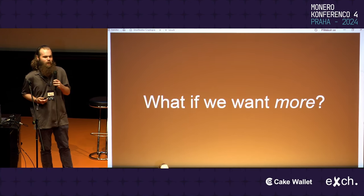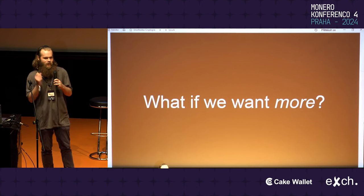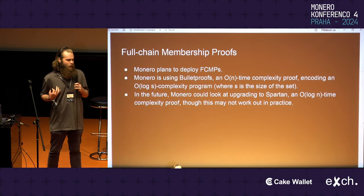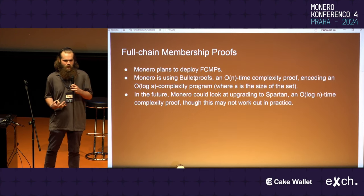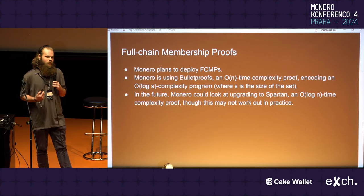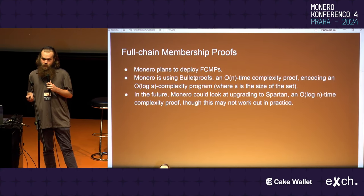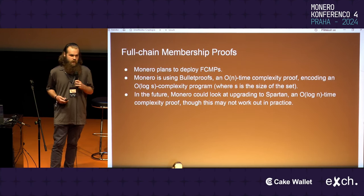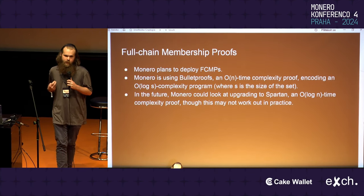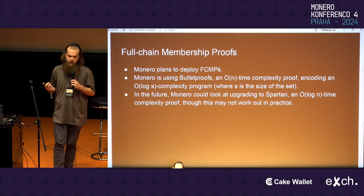What if we want something that doesn't just work, but really goes out there and kicks some ass? Starting with full-chain membership proofs — currently we're looking at using bulletproofs for that purpose. Bulletproofs are a proof we're using with elliptic curves, and they have O(N) time complexity and O(log S) size. If you're unfamiliar with big O notation, this talk uses it a bit.